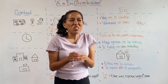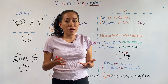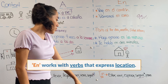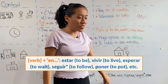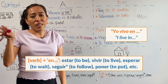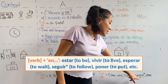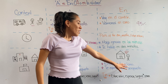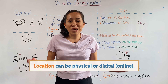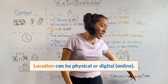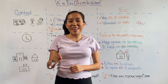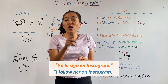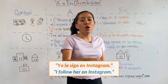So, which type of verbs does en work with? En is going to work with verbs that express location. For example: estar (to be), vivir (to live — yo vivo en...), esperar (to wait), seguir (to follow), and poner (to put). When we talk about location, in this digital world, location can also be digital. So in the case of seguir, I use it with en when I'm talking about following someone on social media. For example, yo la sigo en Instagram — I follow her on Instagram.